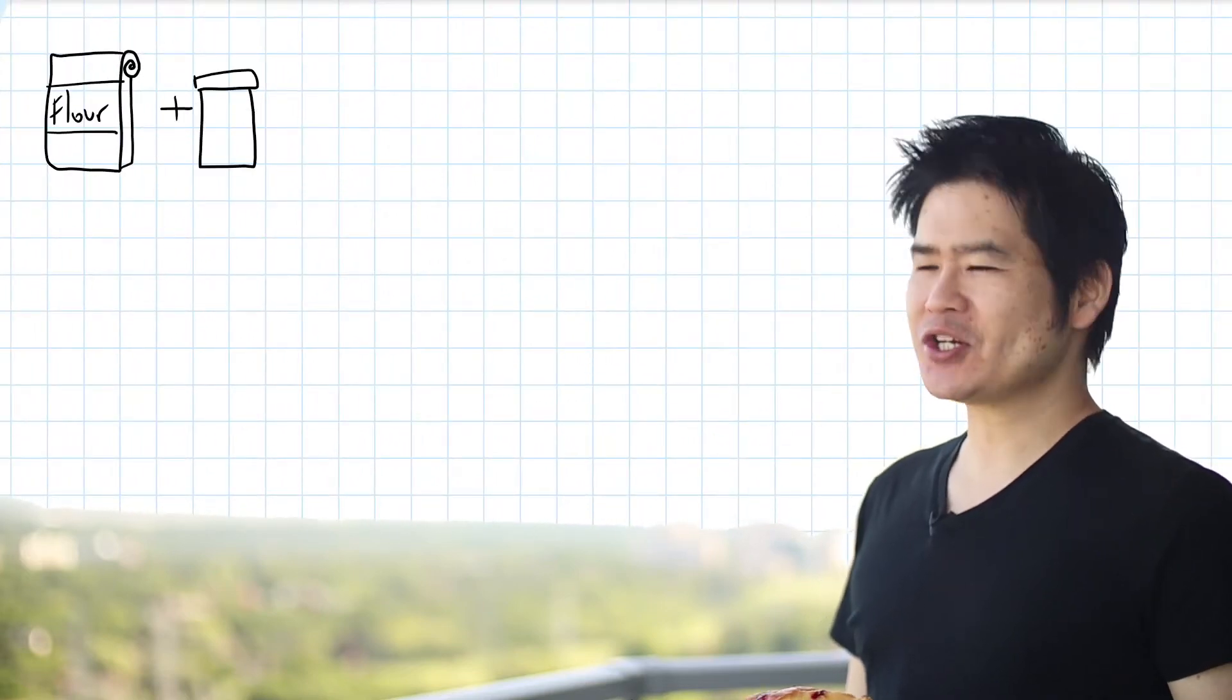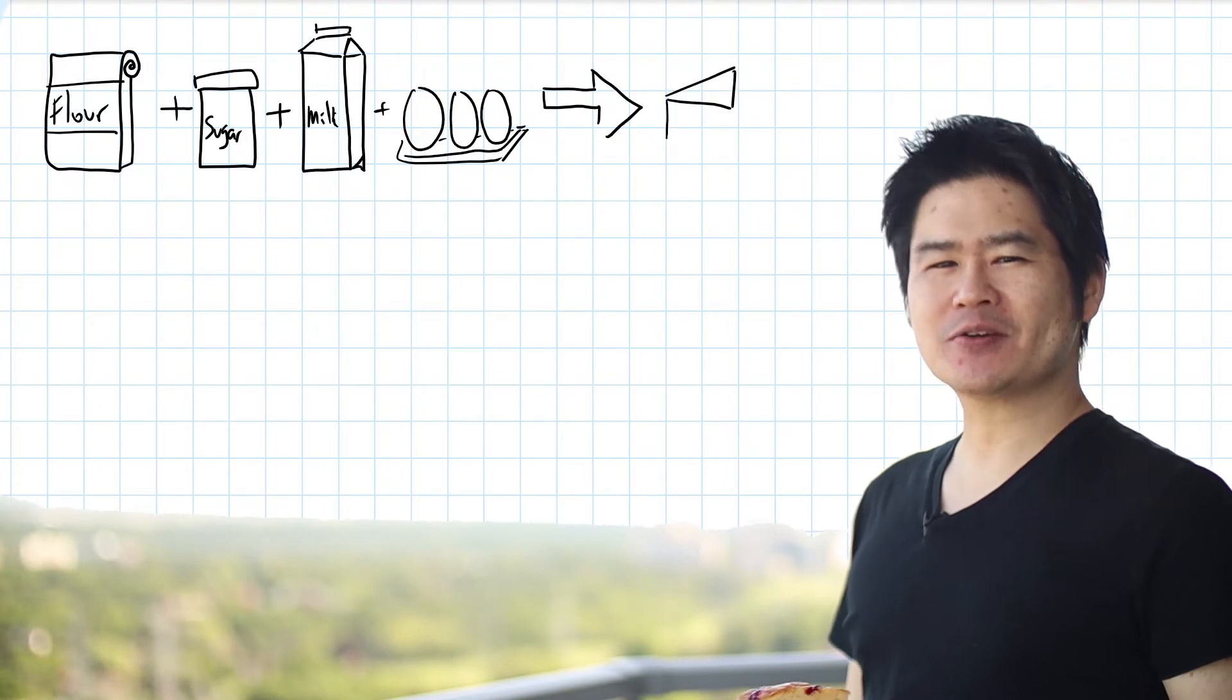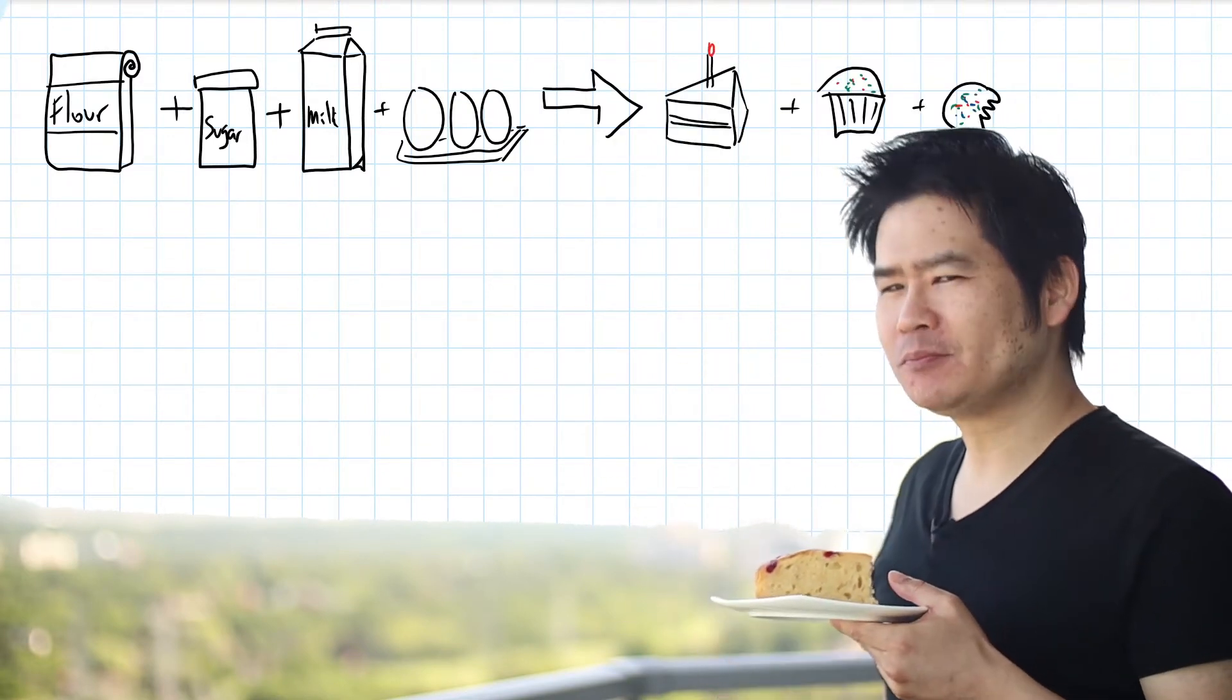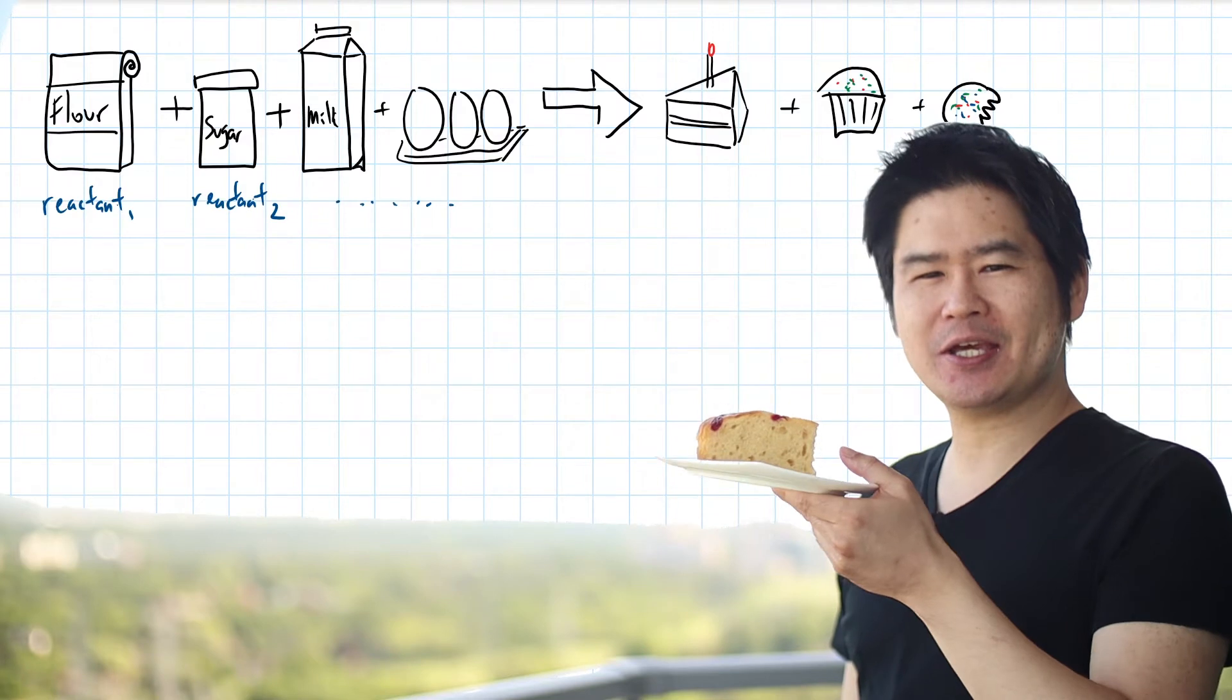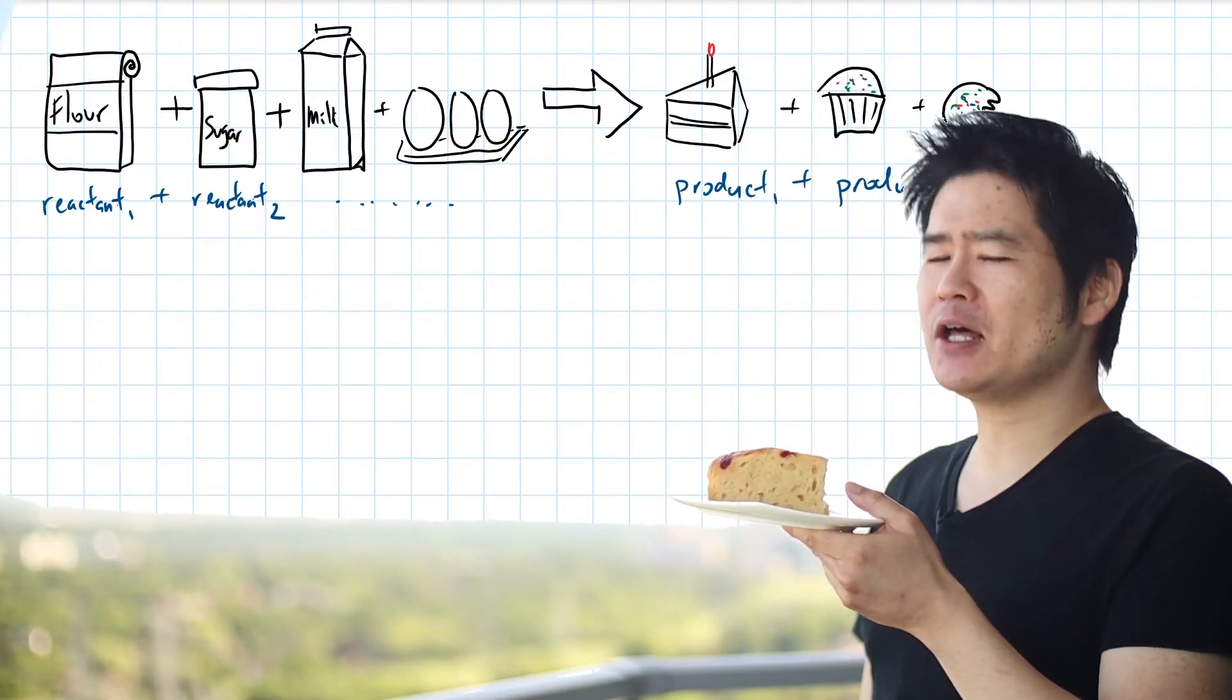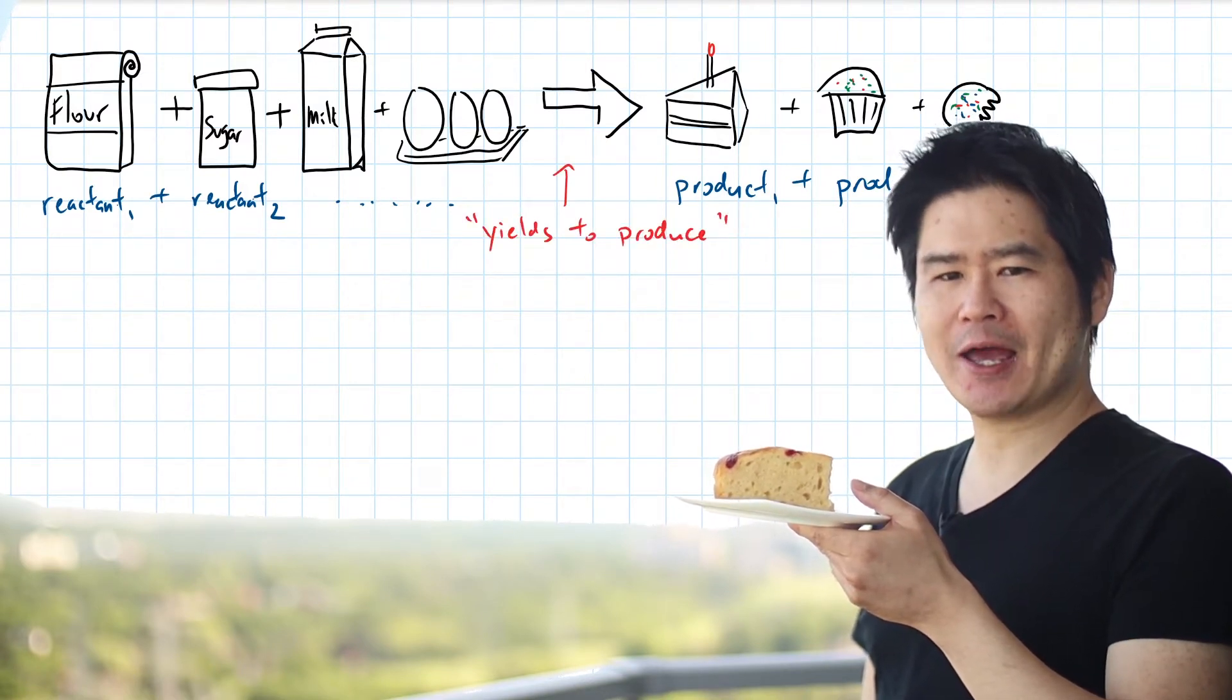With some basic ingredients such as flour, sugar, milk, and eggs, you can make yourself one or more treats like this one. In chemistry, the ingredients are known as the reactants and the delicious treats at the end are known as the products. Directly between the ingredients and the products there's a lovely arrow that points towards the right and that indicates the direction of chemical reaction.